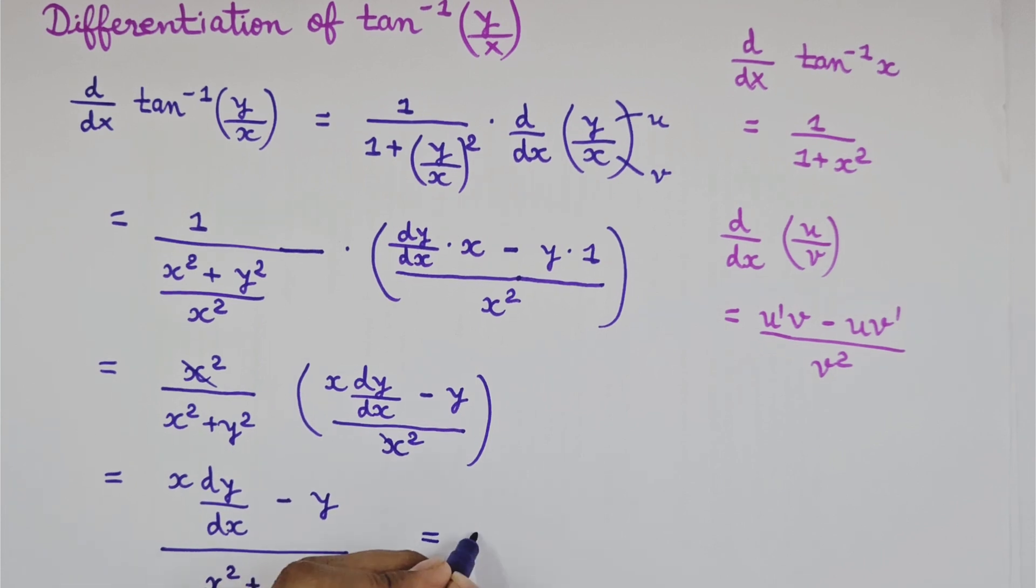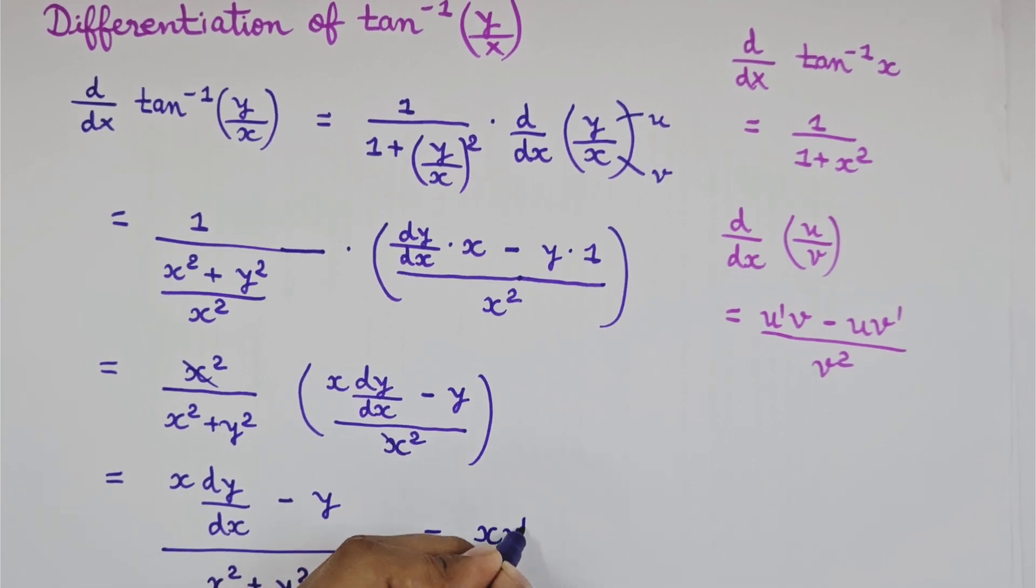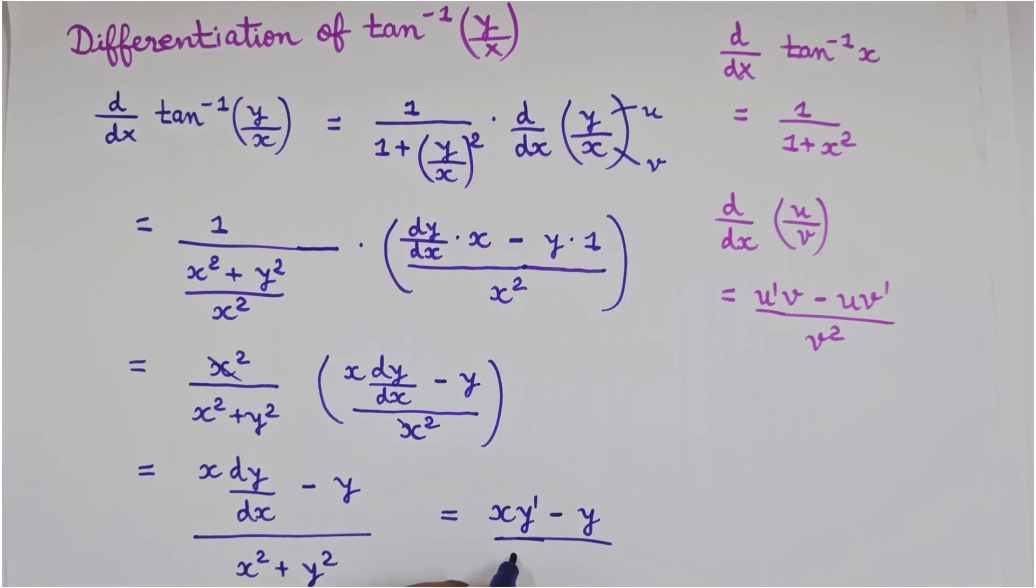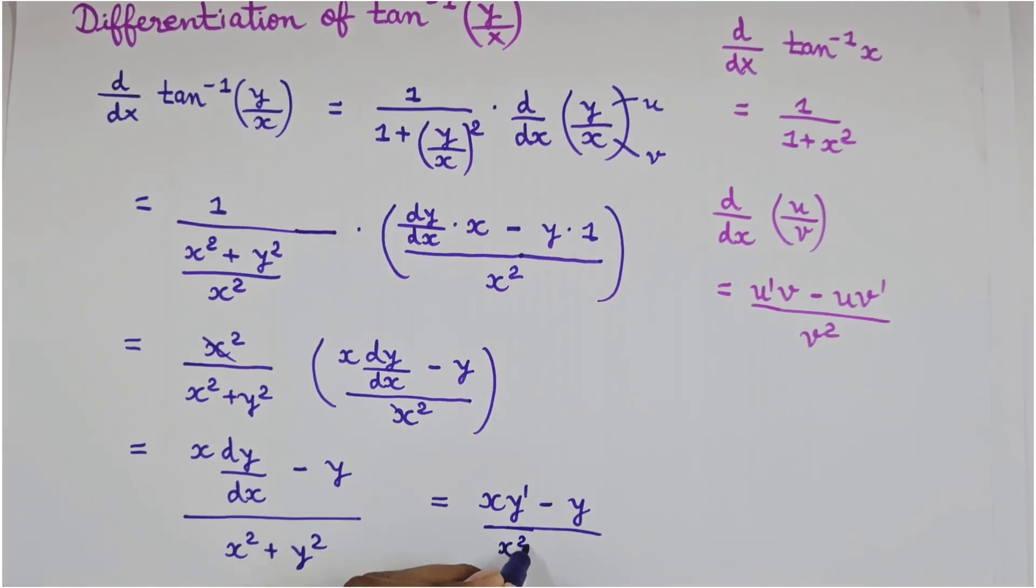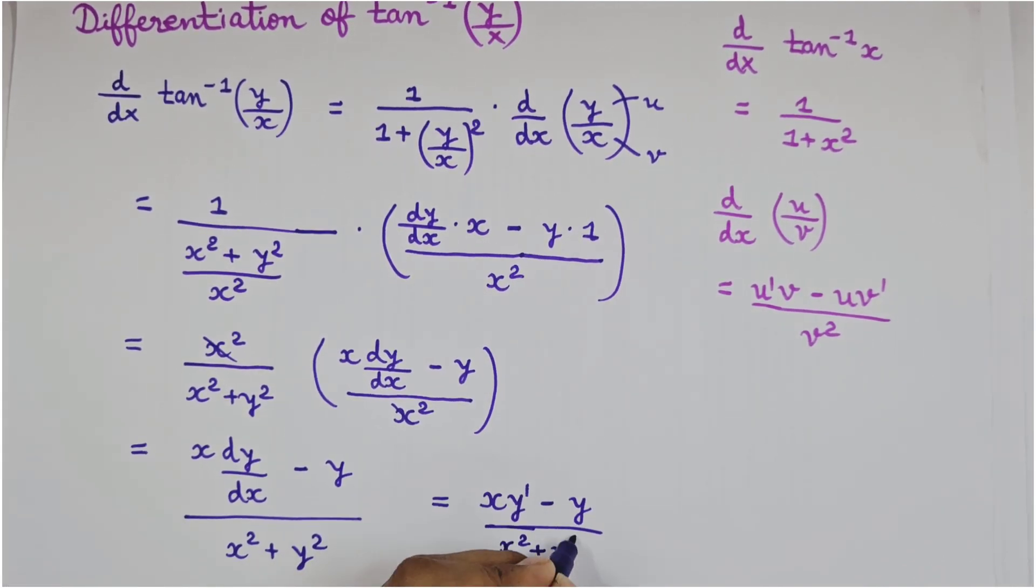dy by dx ko hum log y dash bhool sakta hai. So we can write it like this also, x y dash minus y upon x square plus y square.